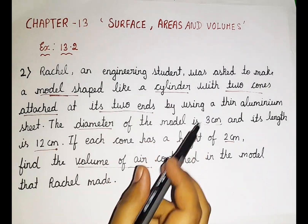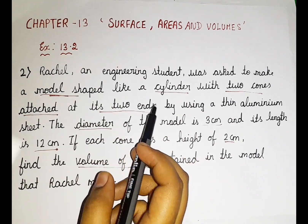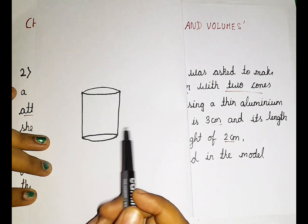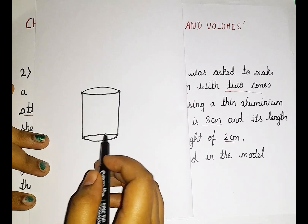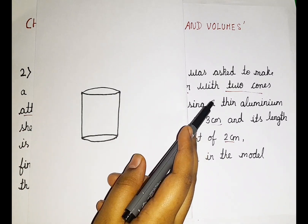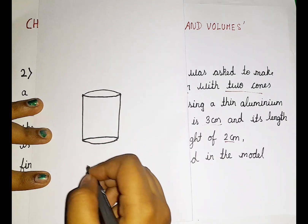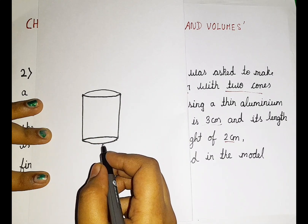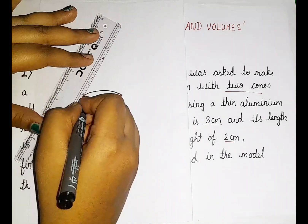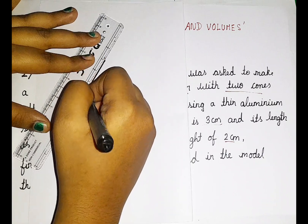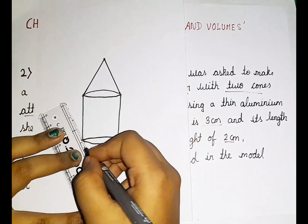So there are two cones. Those cones are attached to the ends. So what is the end of the cylinder? The end of the cylinder is on both sides. Since they mentioned two cones, we are supposed to draw a cone right over here and right over here. That is because they mentioned attached to its ends. So let us draw a cone.